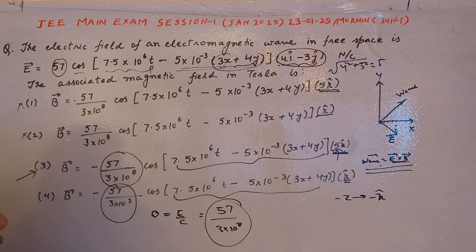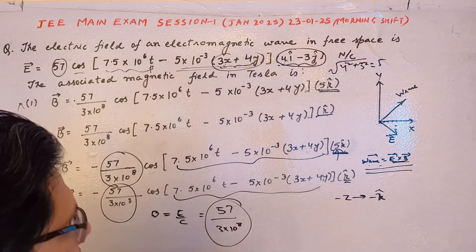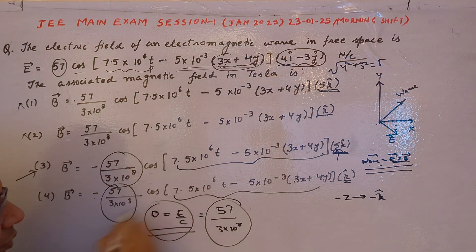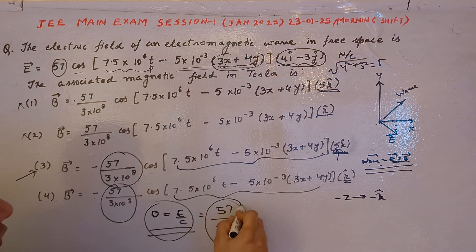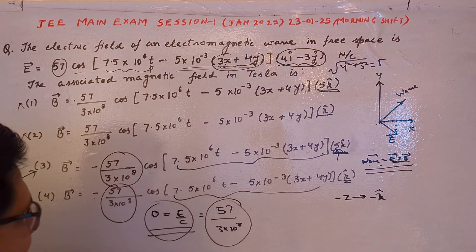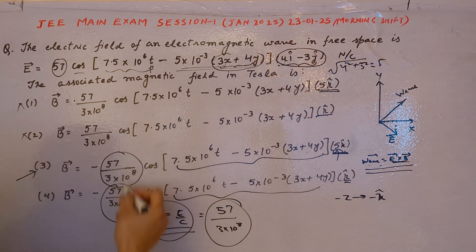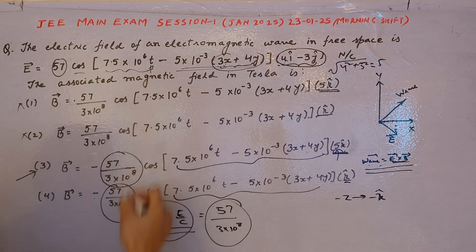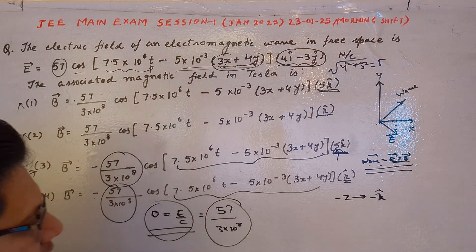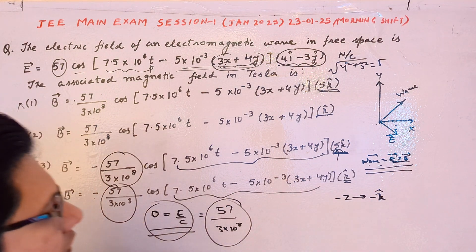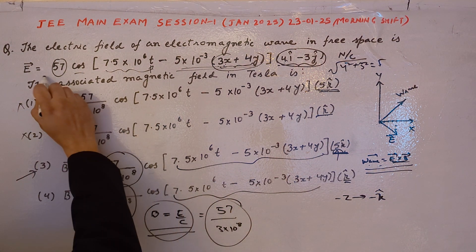Now we check the magnitude. B equals E upon c. The value of E magnitude is 57, divided by the speed of light. We need to check that the magnitude includes the factor of 5 from the electric field vector.